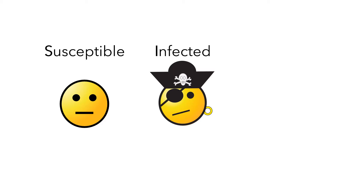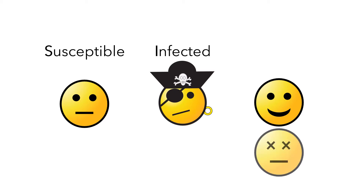The third group of people have either recovered from the disease and have some immunity, or in some cases did not survive the disease. We call them the removed group because they can no longer be infected.